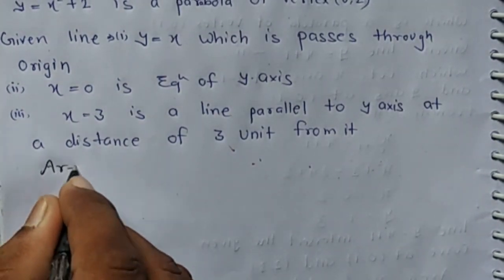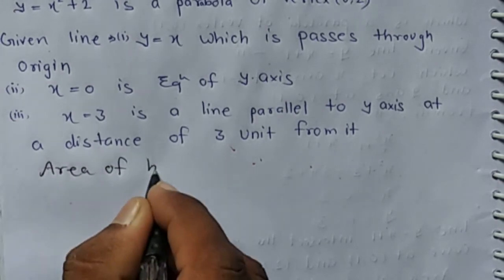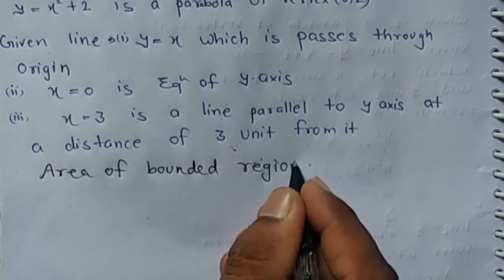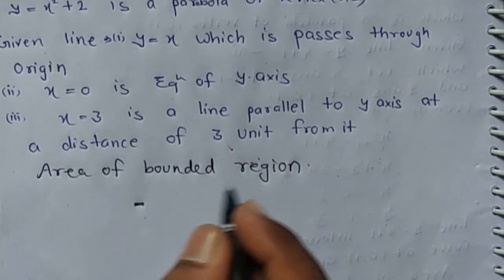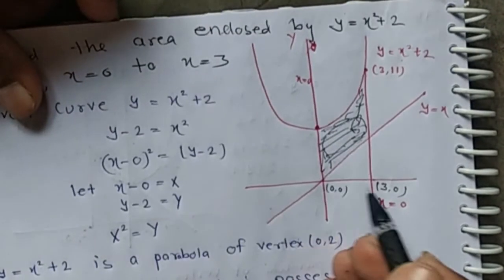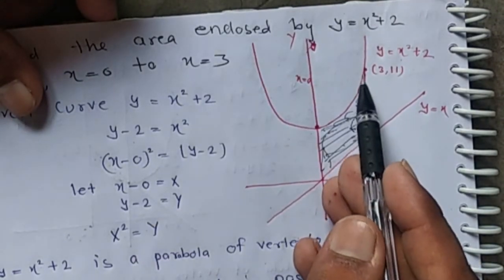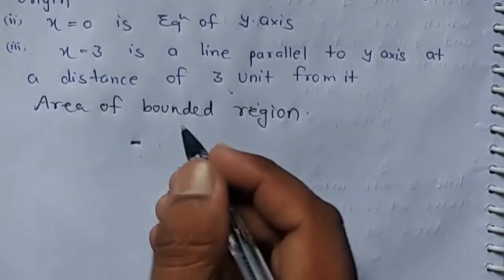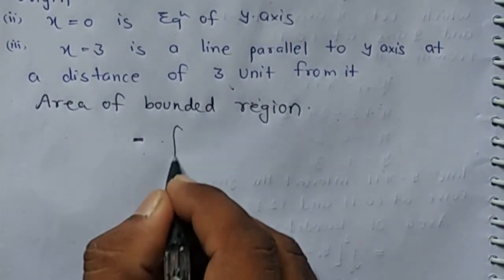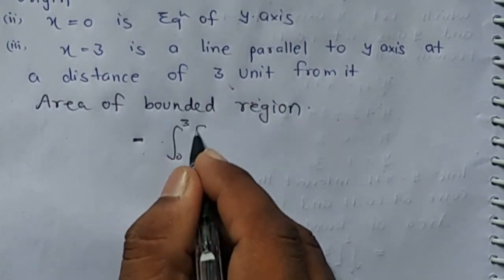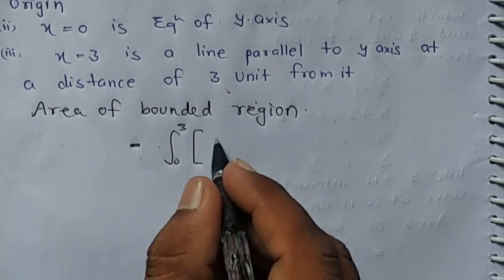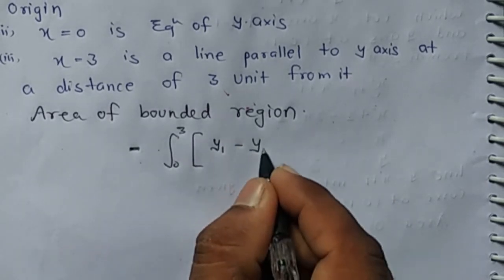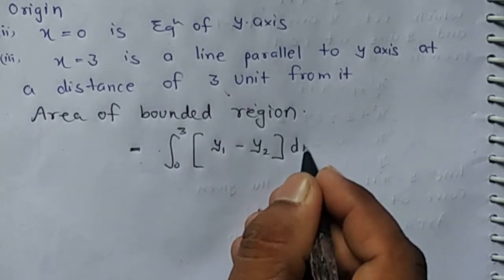Area of the bounded region is from 0 to 3, upper curve minus lower curve. From 0 to 3, the upper curve is the value of y in the parabola, which is y equals x squared plus 2, and the lower curve is the line.